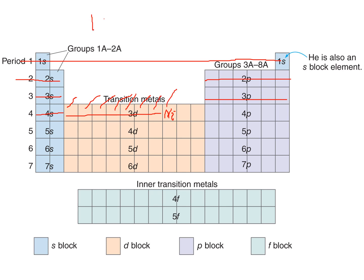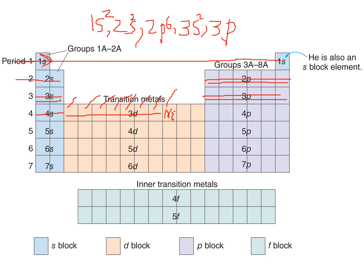So the electronic configuration for nickel is: 1s², 2s², 2p⁶, 3s², 3p⁶, 4s², 3d⁸. This is the complete electronic configuration of nickel.